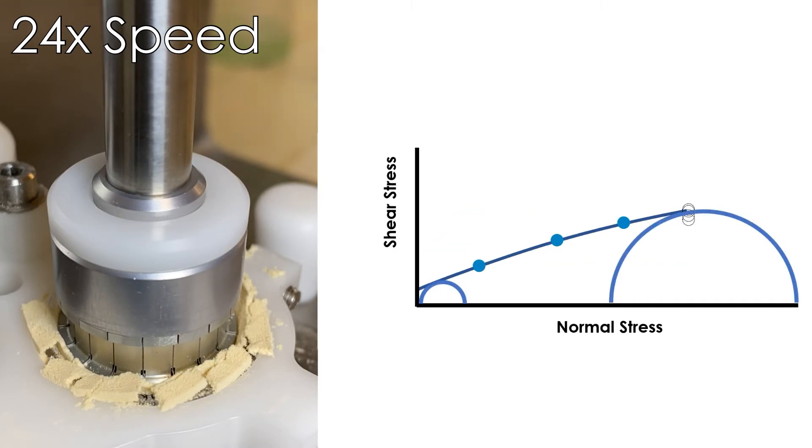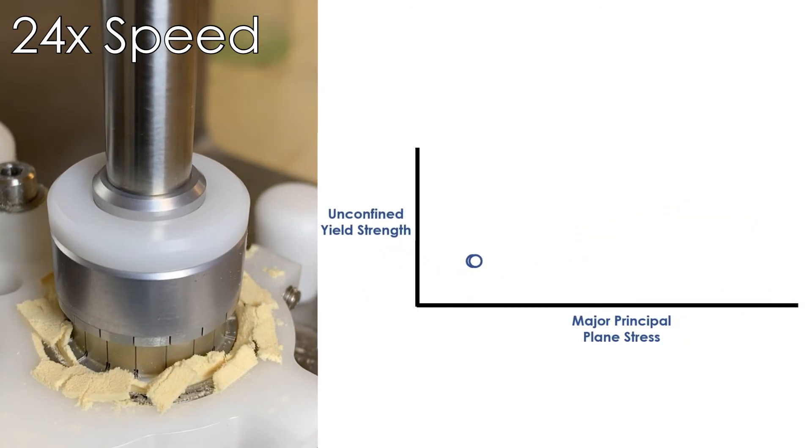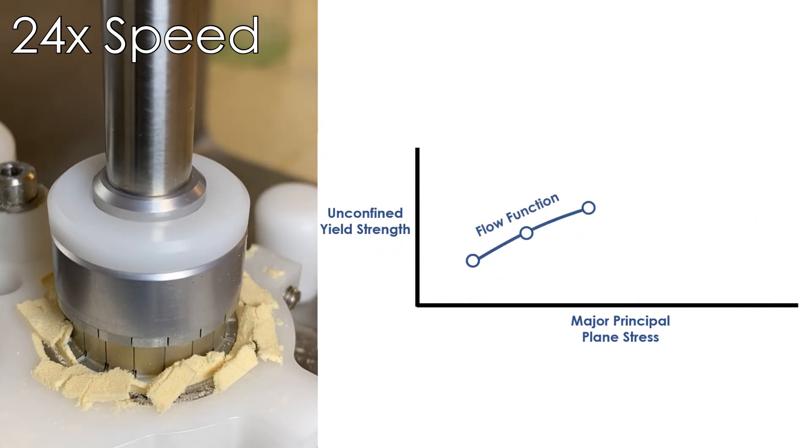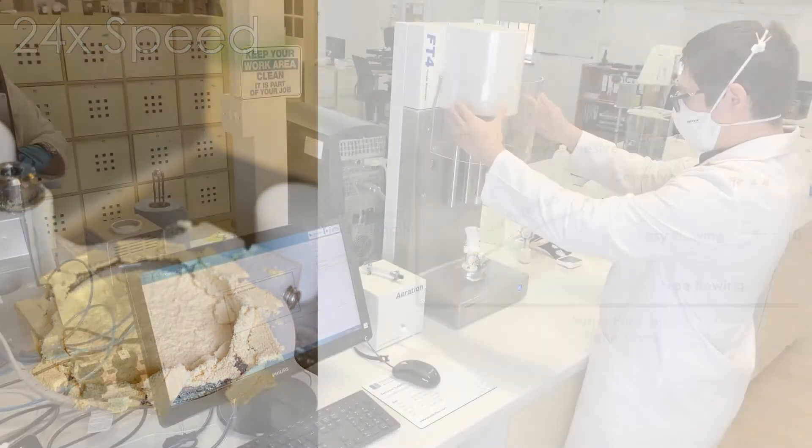With the construction of more circles onto the yield locus, the unconfined yield strength at an associated major principle of consolidation stress is obtained. The process is repeated to generate a flow function for the powder from which the flow function coefficient at a given consolidating stress can be referenced against established categories of flowability.